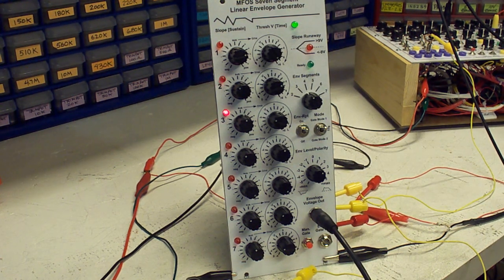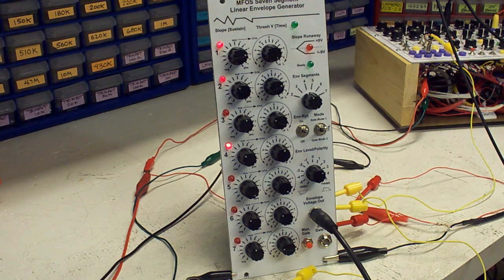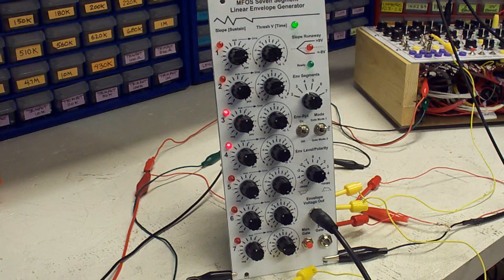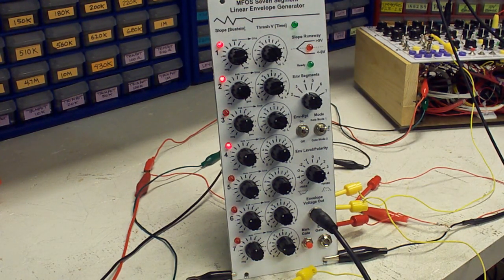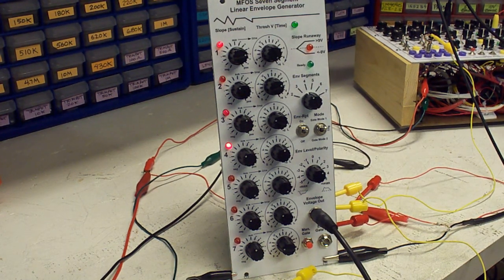Hi, this is Ray Wilson of Music from Outer Space. I want to talk to you for a while here about the MFOS 7 segment linear envelope generator. This took a while to get together but I feel that at this point it is good to go. I think people are going to find it a useful module in their synth for a lot of purposes.